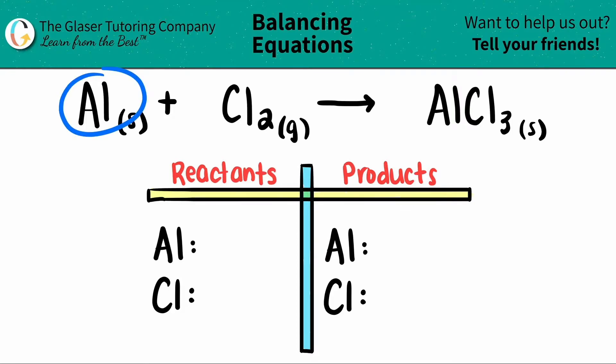Let's start with the left side. I just see that I have one aluminum. There's no subscript or anything, so that means I have one. But with the chlorine, I see that I have a two here, so that means I'm starting off with two chlorines. On my product side, I have one aluminum, because I don't see a number here. And then for the chlorine, we do see a three next door, so that means that I have three chlorines.